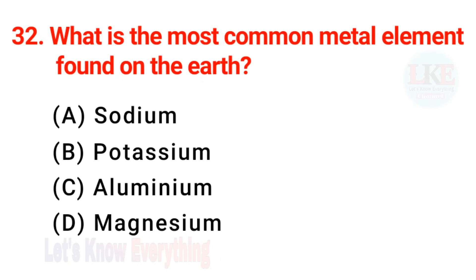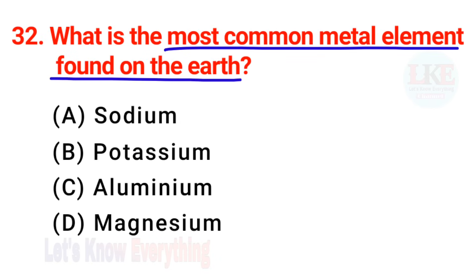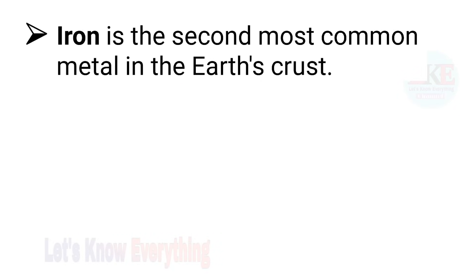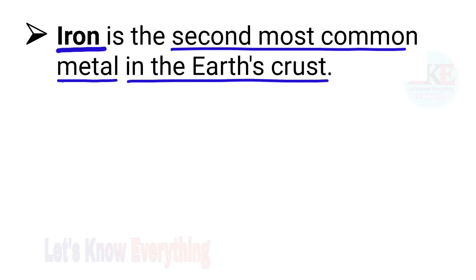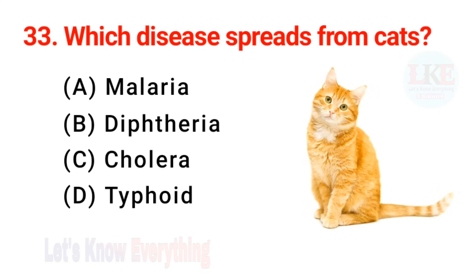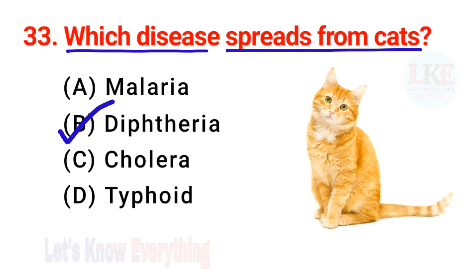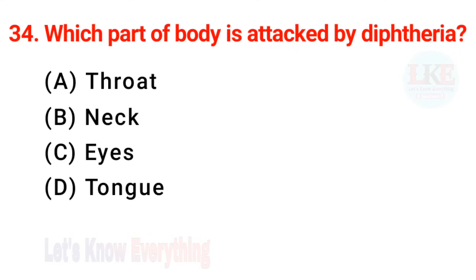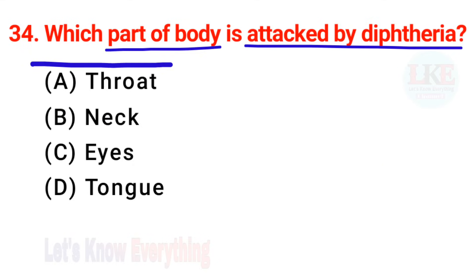Question number 32: what is the most common metal element found on the earth? Right answer — aluminium. Iron is the second most common metal in the earth's crust. Question number 33: which disease spreads from cats? Right answer — diphtheria. Question number 34: which part of the body is attacked by diphtheria? Right answer — throat.